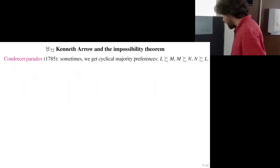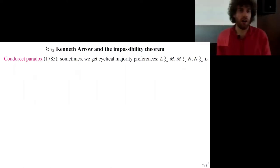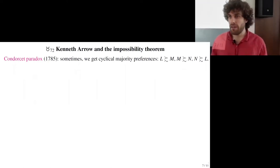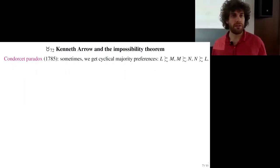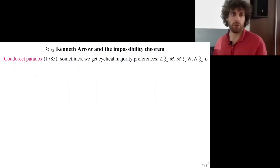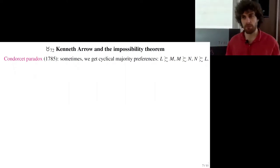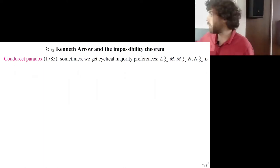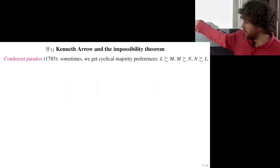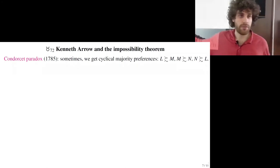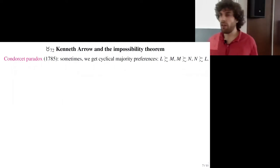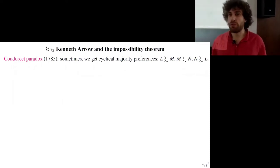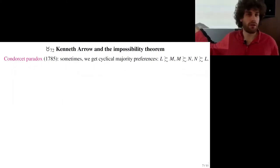This is a significant limitation of democracy: it cannot aggregate preferences in a satisfactory way every time. Empirically, this kind of Condorcet cycle occurs in about 10% of cases, so it still works well in 90% of cases. But there are situations where we must elect a winner not preferred by a majority over any other candidate.